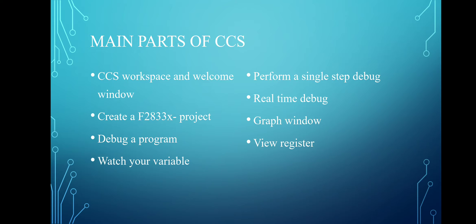First, we will look at the main parts of Code Composer Studio. It includes the CCS workspace. We can create a new project and debug a program, watch your variables, perform a single step debug, real-time debug, graph window, and view registers. Debug means suppose you have written a program and you want to upload your code into the DSP processor — downloading your code into the DSP processor is called debugging of the program. Watch variable means suppose you have run your program and you want to see your variables; you can see them in the variable expression windows. You can also plot your graph, plot your FFT, perform a single step debug, or perform a real-time debug.